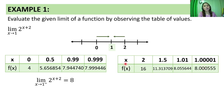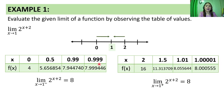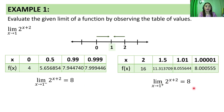Observe again: habang lumalapit yung x values natin sa 1 from the right, the f of x values also approach 8. Hence, the limit of 2 raised to x plus 2 as x approaches 1 from the right is equal to 8. Since the one-sided limits are equal, the limit exists, and the limit of 2 raised to x plus 2 as x approaches 1 is equal to 8.